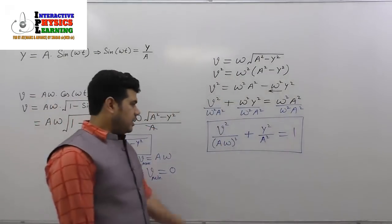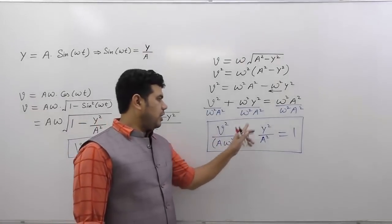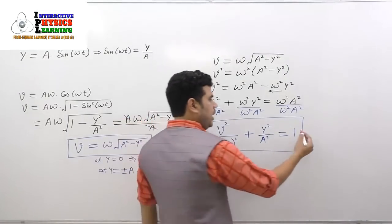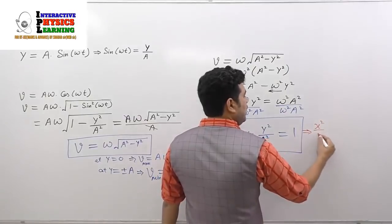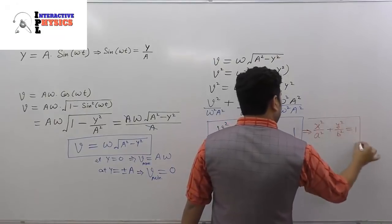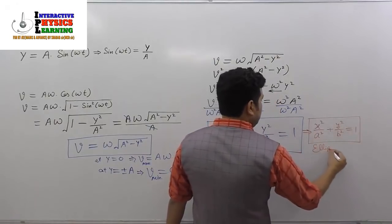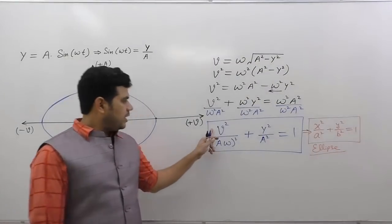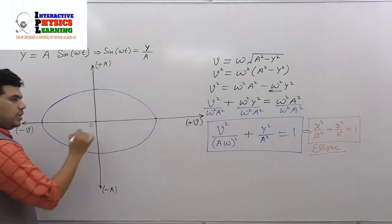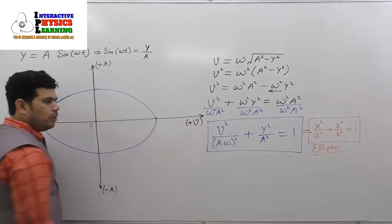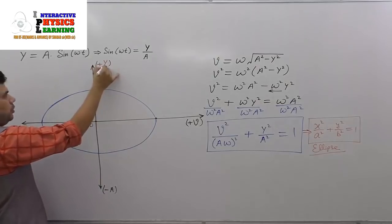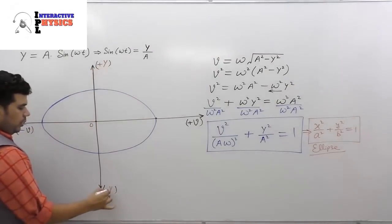So we can say v²/(aω)² + y²/a² = 1. This is the equation of an ellipse, in the form x²/a² + y²/b² = 1. The graph will be in the form of an ellipse. On the x-axis we take velocity, and on the y-axis we take displacement — positive y upward and negative y downward.